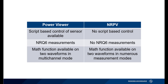Something else to notice is the programs' compatibility with the R&S NRQ6 sensor. NRQ6 is a frequency selective power sensor that has its own web GUI for measurements, but some basic measurements can be taken with Power Viewer. These measurements are not possible on NRPV. NRPV is capable of doing certain math functions on multiple waveforms you are measuring in numerous measurement modes, while Power Viewer has this capability only in multi-channel mode.